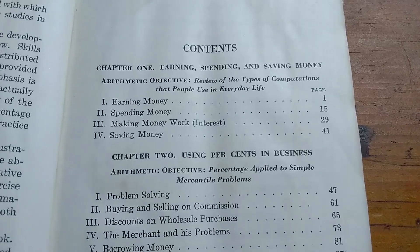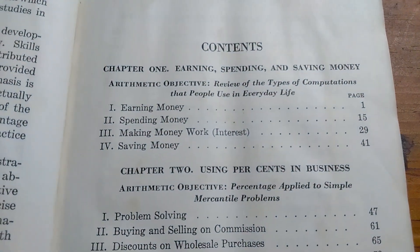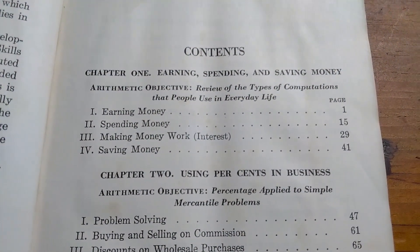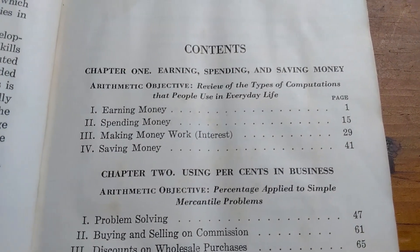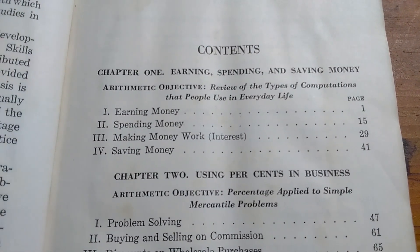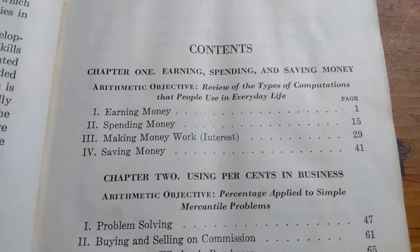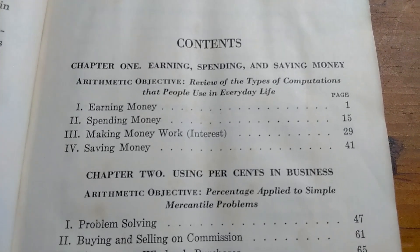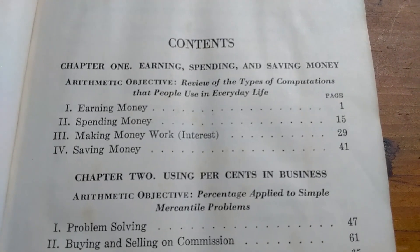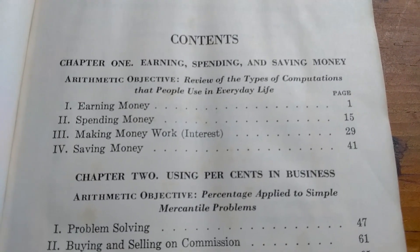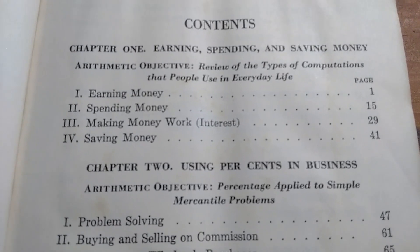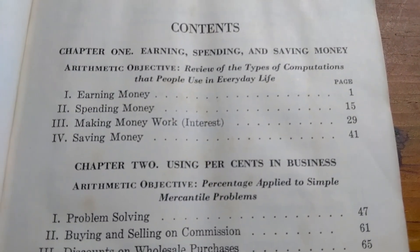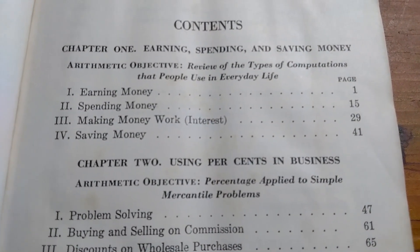Here's the table of contents. Chapter one is on earning, spending, and saving money. The arithmetic objective is review of the types of computations that people use in everyday life. It talks about earning money, spending money, making money work — in other words, interest — and saving money.